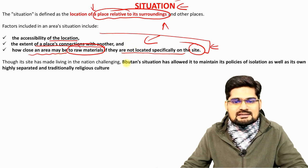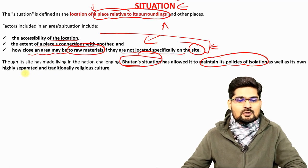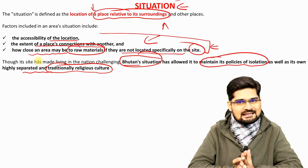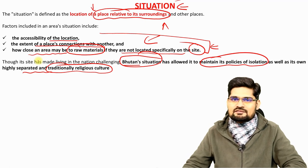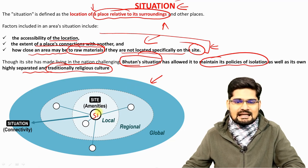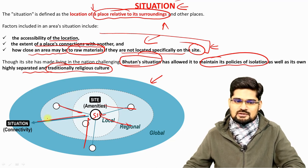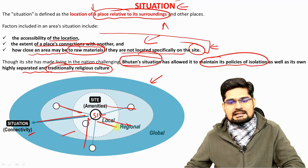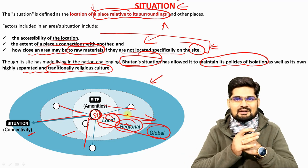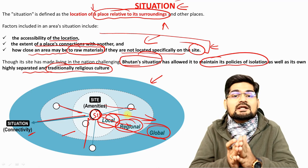Taking Bhutan as an example again, its situation has allowed it to maintain policies of isolation and a highly separated, traditionally religious culture, because it is highly barricaded from all sides. Situational attributes include connectivity and accessibility at local, regional and global levels. That is where the role of technology, transport and scientific inventions has become really important.